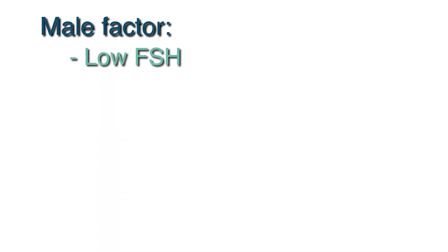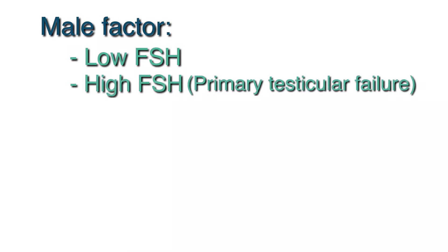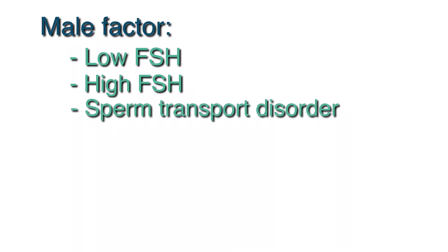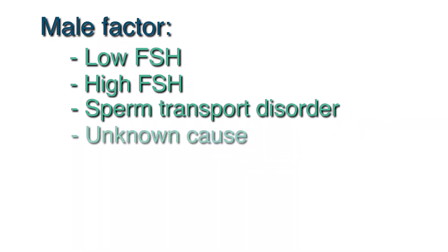Next we'll look at causes of infertility related to the male. These also fall into similar categories as the woman. The first category is when the FSH is low and the body remains in a quiet state. The next category is when the FSH is high, or primary testicular failure — examples include genetic disorders, undescended testicles, varicocele, infections, environmental toxins, or chronic illness. The next category is disorders of sperm transport — an example is a patient with cystic fibrosis who has a congenital absence of the vas deferens.